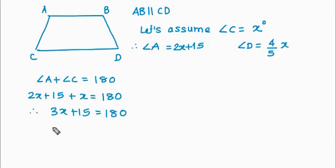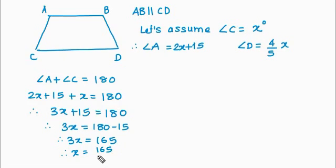So which means, therefore, 3x is equal to, this 15 goes that side becomes minus. And therefore, x is equal to 165 divided by 3. That is equal to 55 degrees. So angle C we got 55.